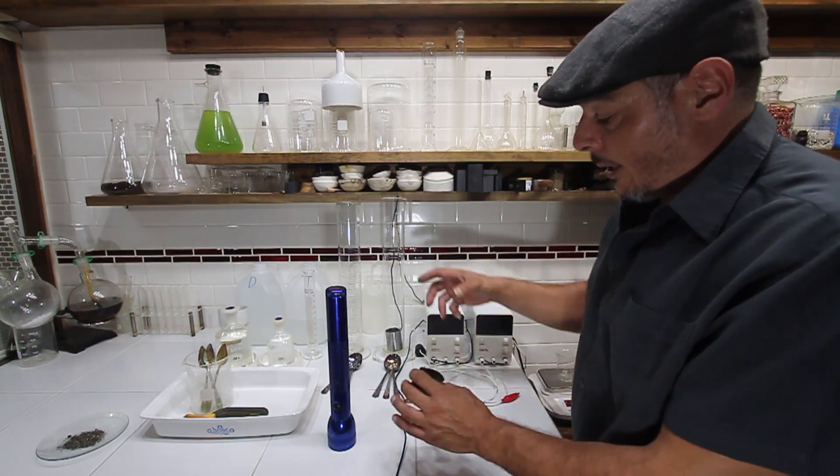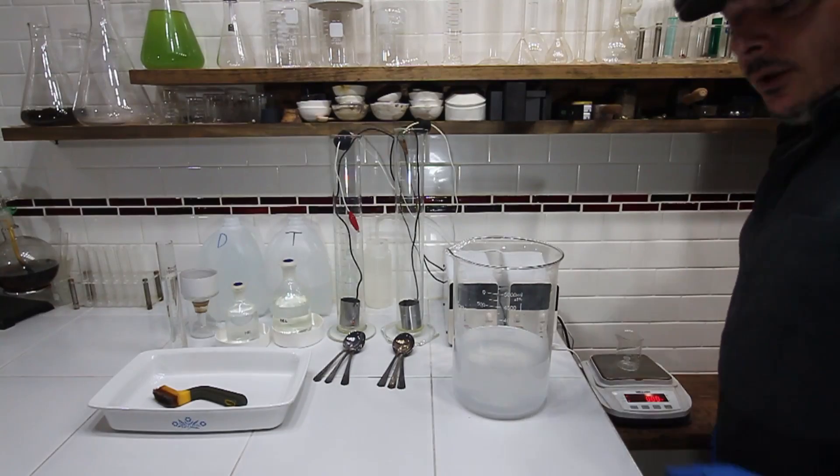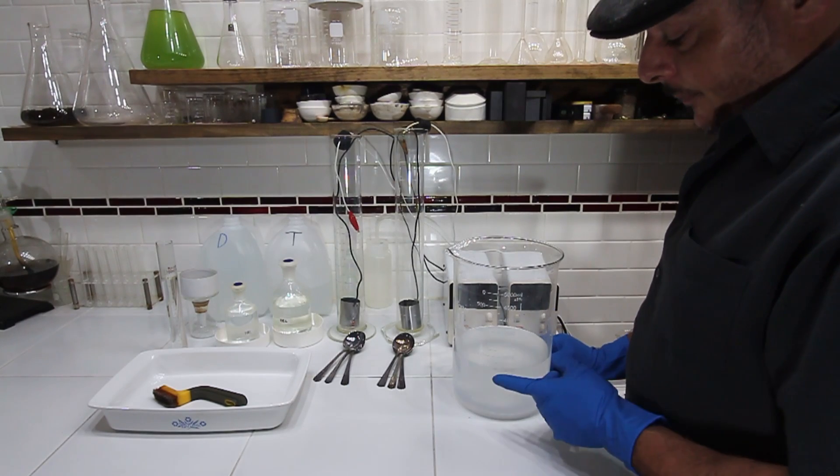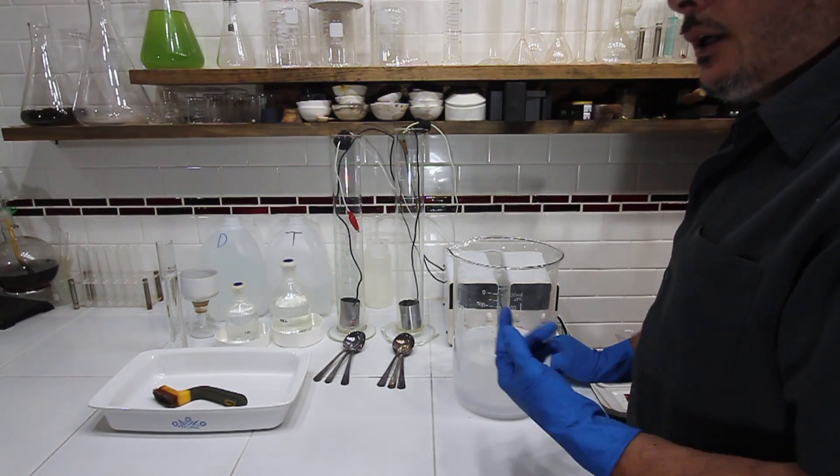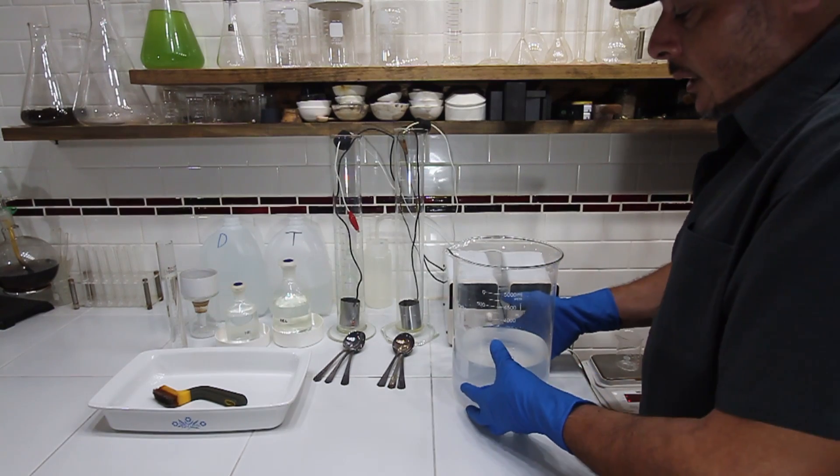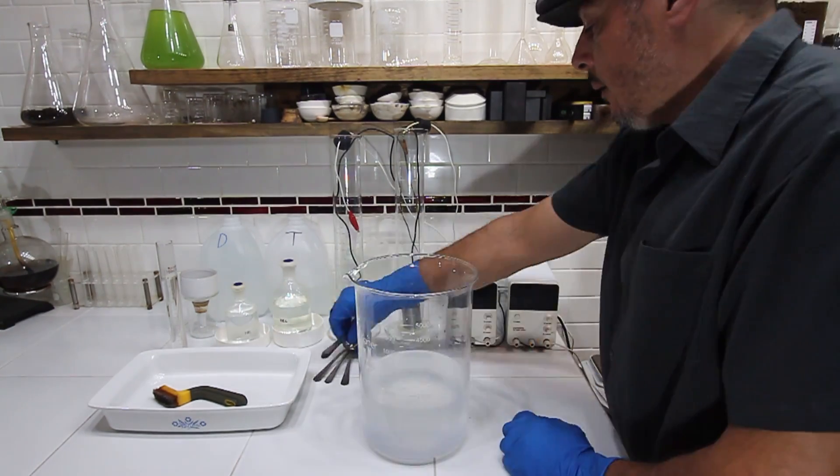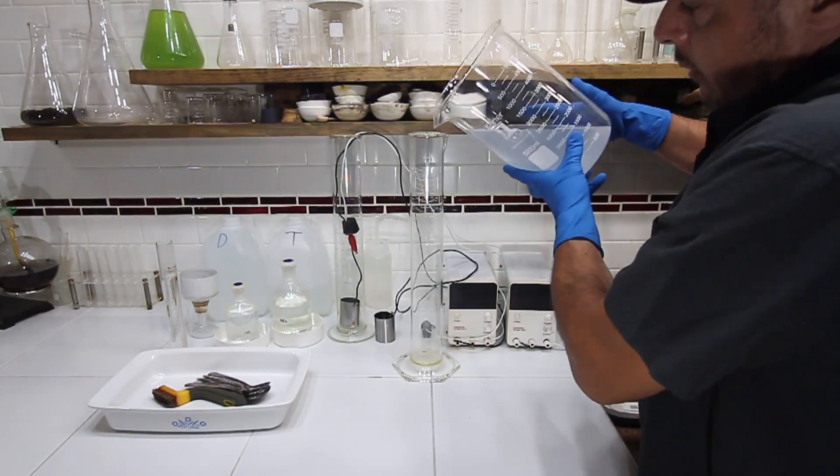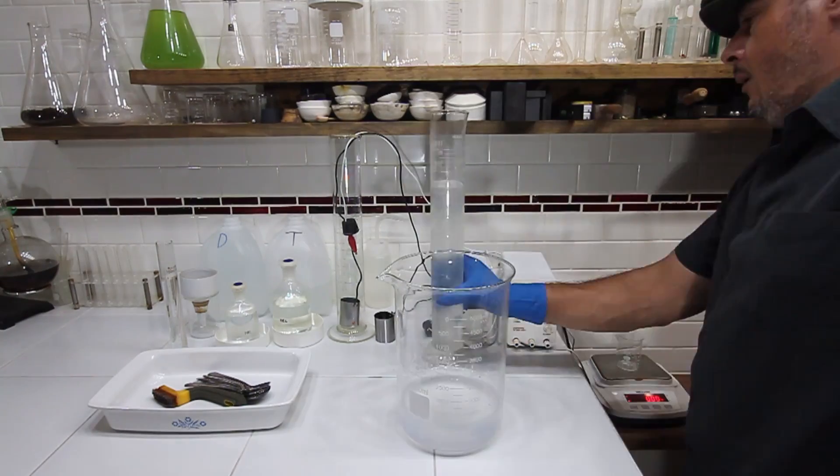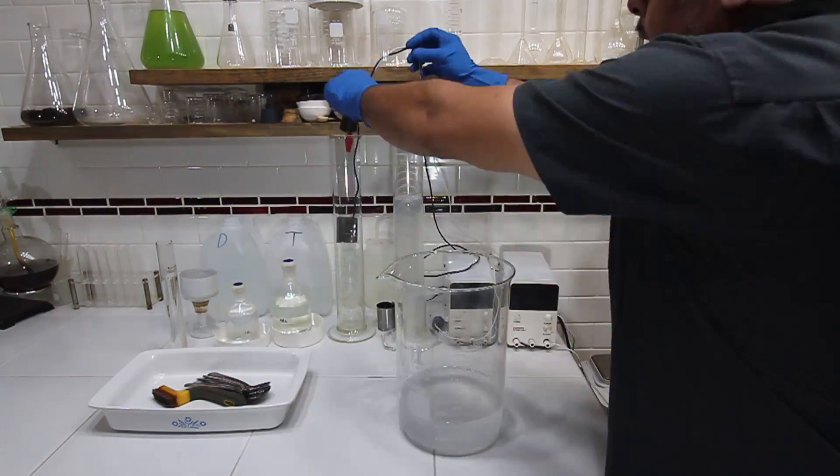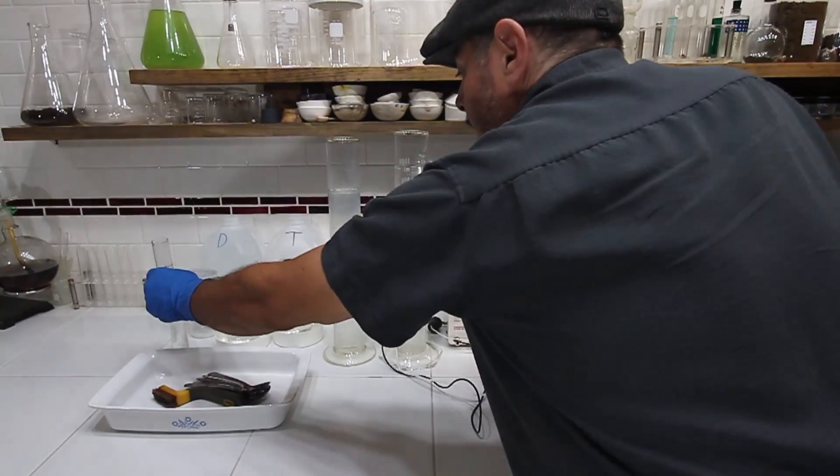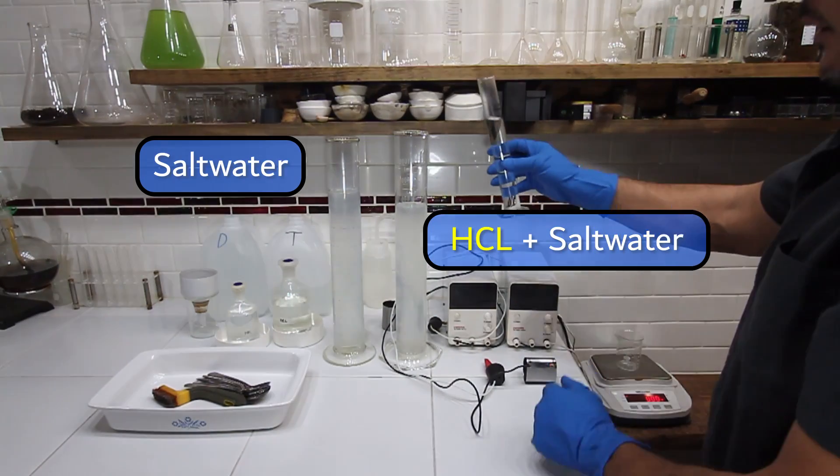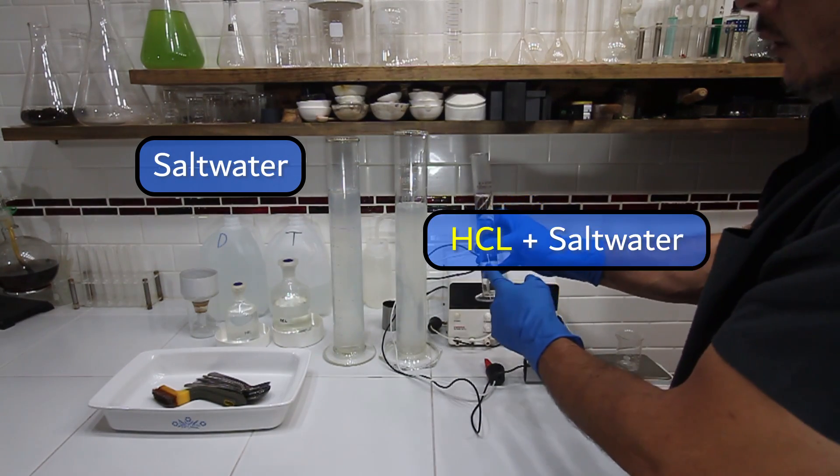So we have our saltwater dissolved—two liters of tap water and 200 grams of just regular table salt. What we'll do here is in a graduated cylinder, we're going to add 100 milliliters of hydrochloric acid.